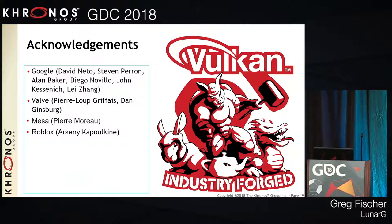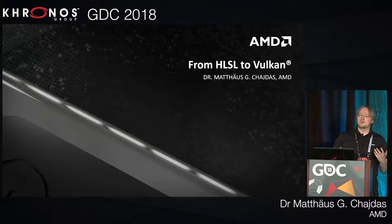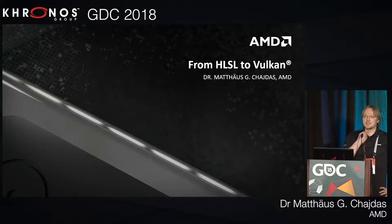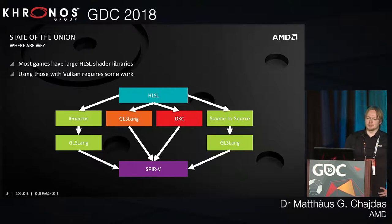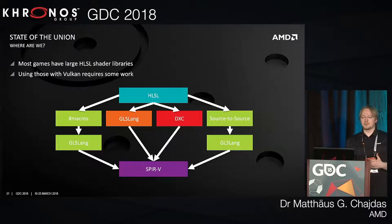Thanks, Greg. I'm Matthias, from AMD support — if you send questions about Vulkan and the shader compiler, that's me. I'm going to talk about how to get from HLSL to Vulkan, because that's the main thing we've seen when people are trying to port: they have huge HLSL code bases and want to figure out how to run them. A couple of people have tried approaches like hash-defining everything and passing it into GL Slang, which I would certainly advise not trying for shipping games — it becomes very unwieldy.